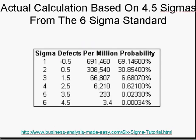So this chart shows the sigma levels where the actual calculations are made. In actuality, the 3.4 defects per million is calculated at 4.5 sigmas, so it is very pessimistic. If that 1.5 sigma shift never occurs, the probability of a defect would be much less than 1.